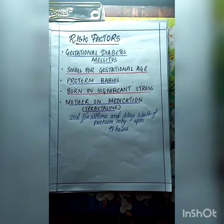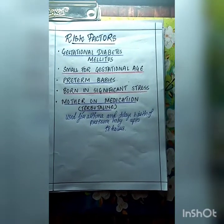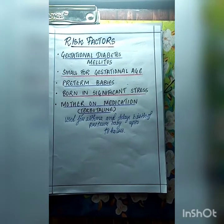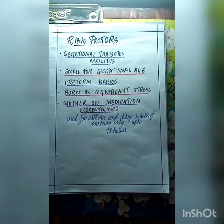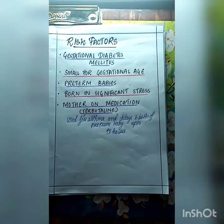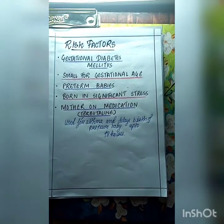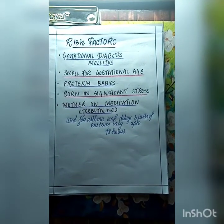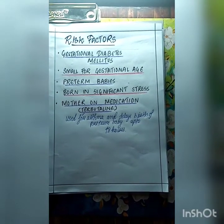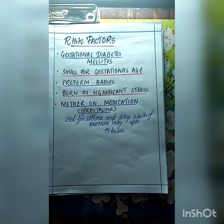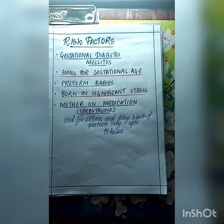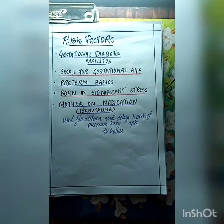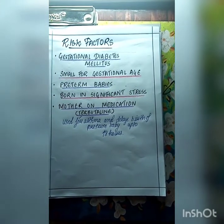Risk factors for hypoglycemia: First, gestational diabetes mellitus, which is hyperglycemia during pregnancy with symptoms similar to diabetes mellitus and characterized by insulin resistance. Other risk factors include small for gestational age, preterm babies, birth in significant stress, and mother on medications — for example, terbutaline, which is used for asthma and delays birth of preterm babies by up to 48 hours.